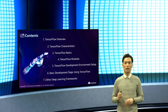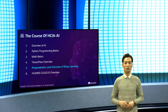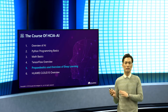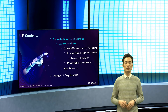The fifth chapter is principles and overview of deep learning — this is the core part of this course. In this chapter, you will first learn some basic knowledge of machine learning, such as what a learning algorithm is and some common machine learning algorithms.